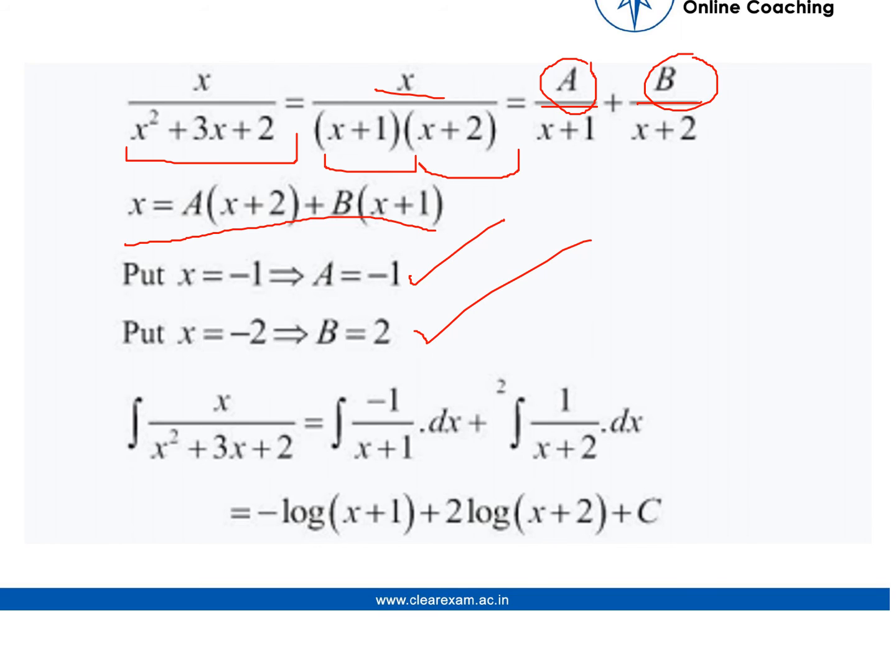So if we put the respective values, we will see that this integration is equal to minus 1 upon x plus 1 dx plus 1 upon x plus 2 dx, and here we have a 2 outside.